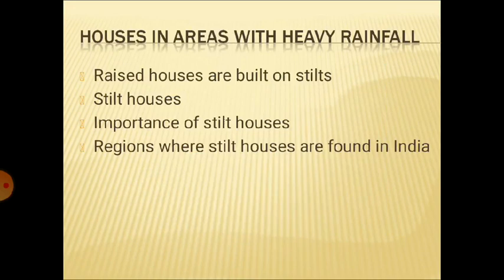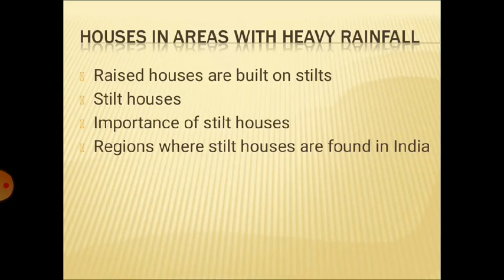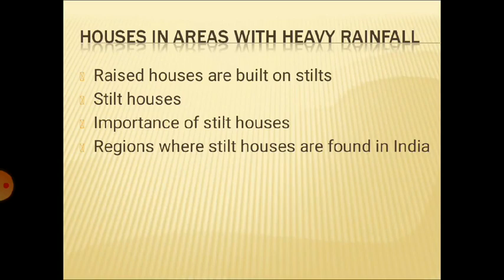Then comes houses in areas with heavy rainfall. In places where heavy rainfall occurs almost throughout the year, people make houses on stilts. These stilt houses are made to protect people from natural disasters and calamities like floods and heavy rainfall, because sometimes houses can be washed away by heavy water. When houses are constructed on poles, they keep you safe during floods and other natural calamities. Such houses are found in the eastern and northeast region of India.